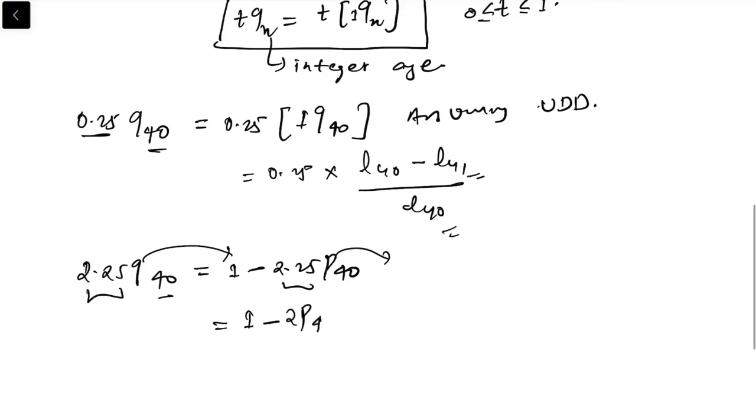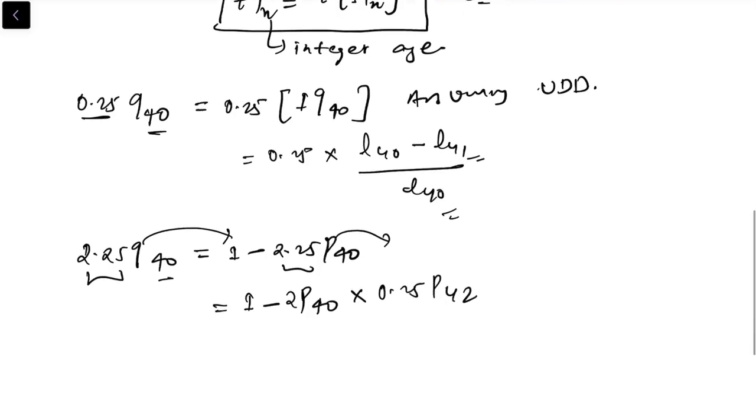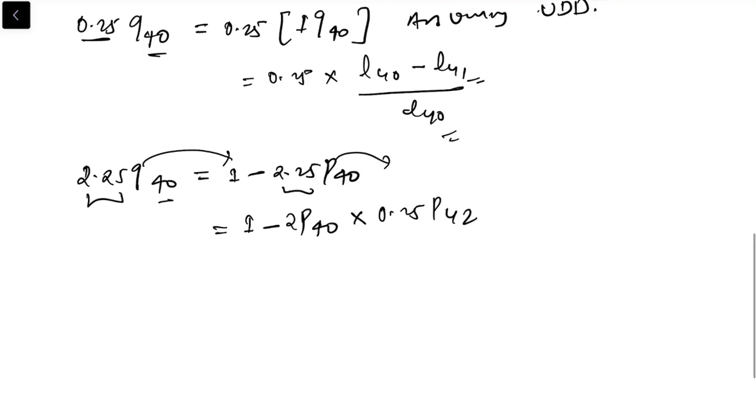So I can write 1 minus 2 p40 times 0.25 p42 using the principle of consistency. Now this is 1 minus 2 p40 and this is 1 minus 0.25 times 1 q42. Now again you can look at the values from the table and solve this.